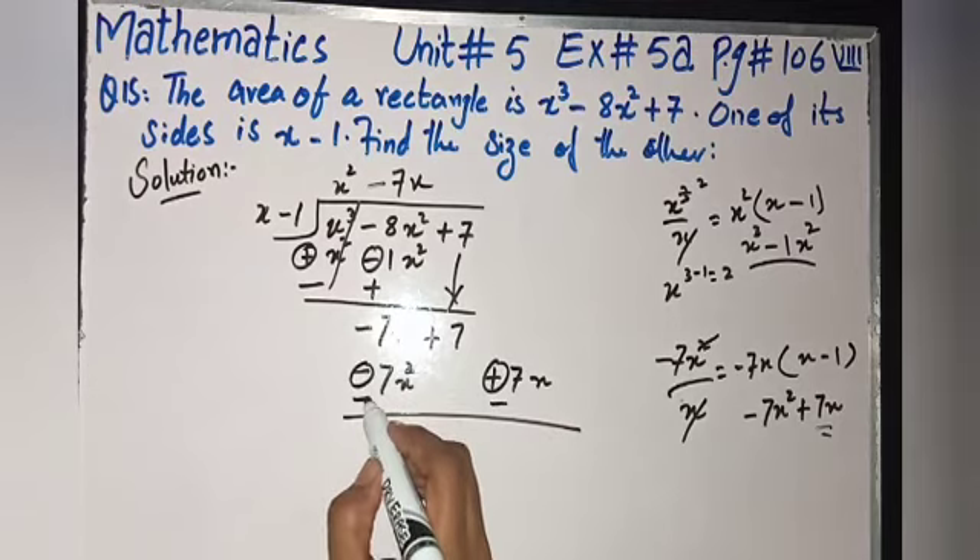Write in ascending order: minus 7x, then plus 7, copy down. In the third step, repeat same method: 7x upon x, x cut with x, minus 7 is the answer of third step.